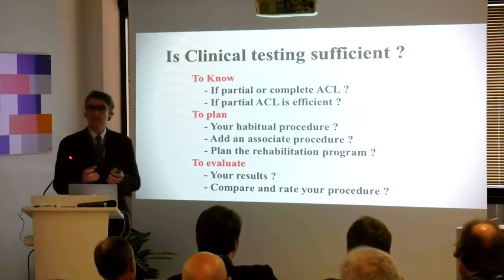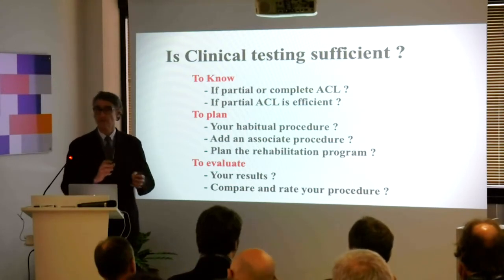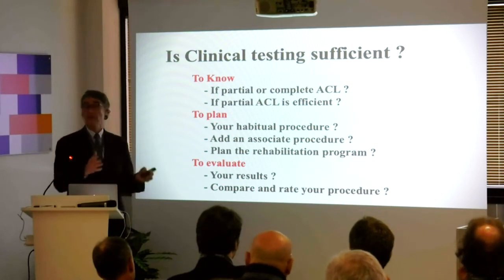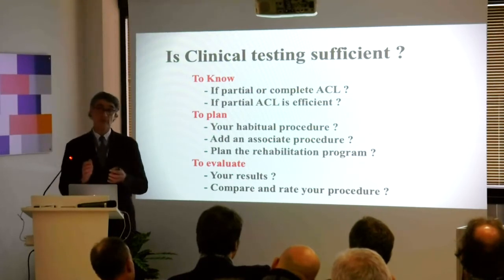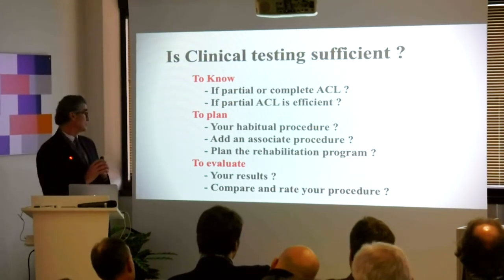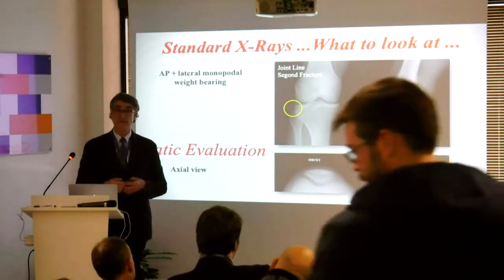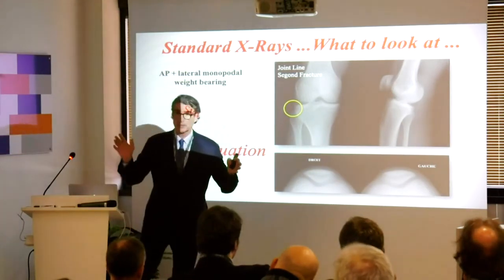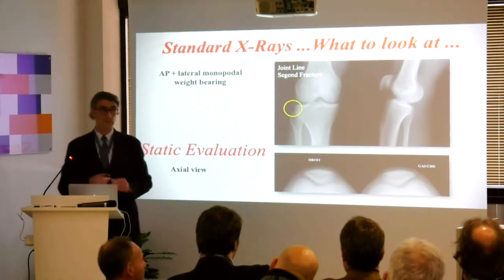Is clinical testing sufficient — to know if you have a partial or complete tear, whether your partial tear is functional, to plan your surgery, to decide on an associated procedure, and also to plan the rehabilitation program? Probably not. You have to use the tools you have. First of all, X-rays — fundamental. We always start with a monopodal weight-bearing X-ray and a sagittal weight-bearing X-ray. Never forget the axial view, which is important.